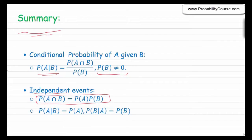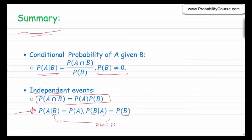Another way of writing independence is probability of A given B is equal to probability of A. In other words, the additional information that event B has occurred does not change probability of A. Similarly, we can write probability of B given A is equal to probability of B. We can write these two as long as probability of A and probability of B are non-zero, because we are conditioning on these things.